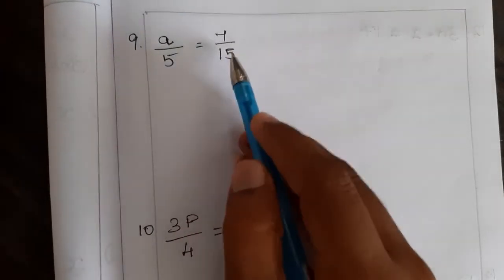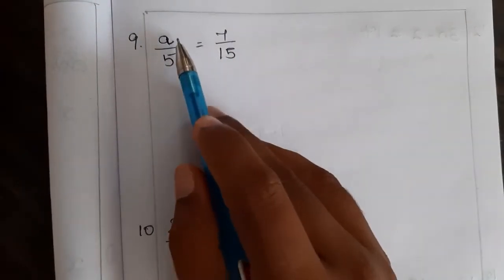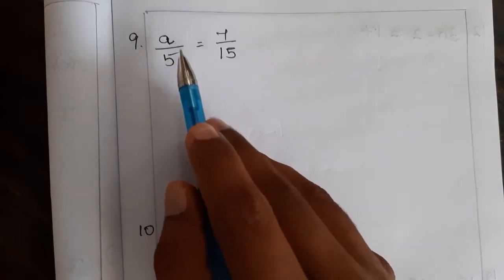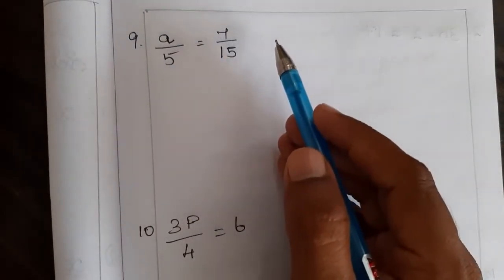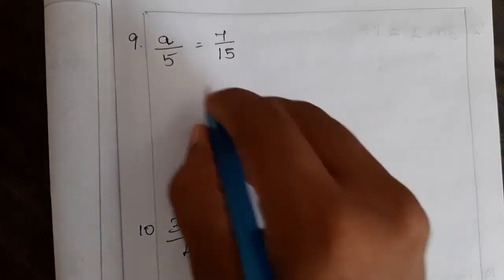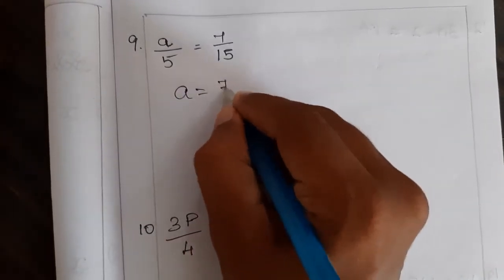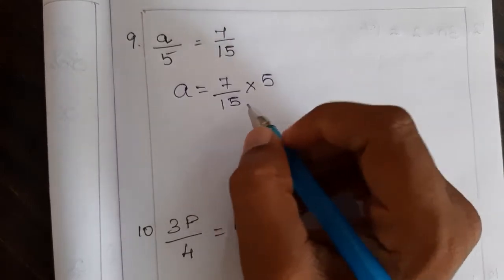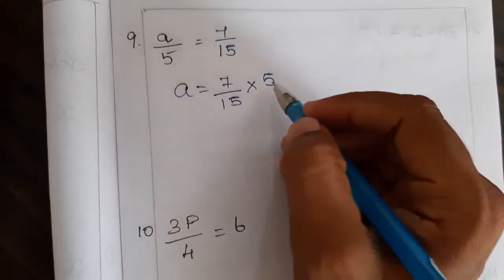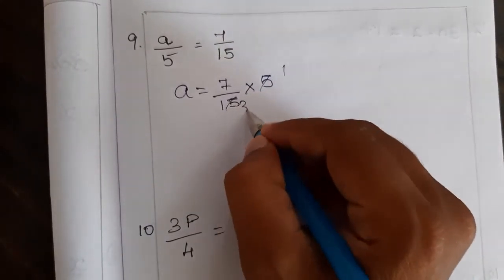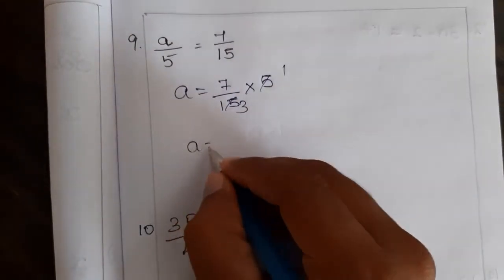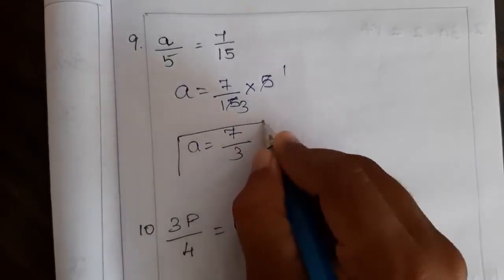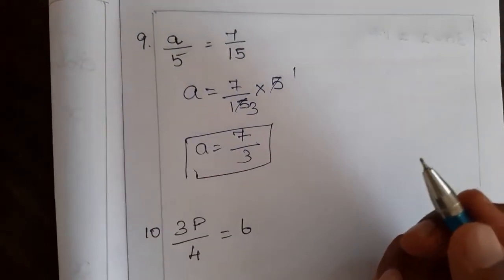Next problem: a divided by 5 is equal to 7 by 15. Here, we need to find the variable a, and 5 is divided with a. So let me transfer this 5 to that side — the division will become multiplication. So a is equal to 7 by 15 into 5. We can simplify: 5 and 15 — 5 goes into 15 three times. So a is equal to 7 by 3.